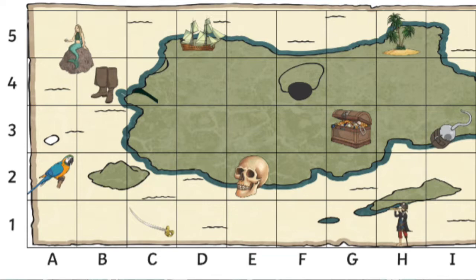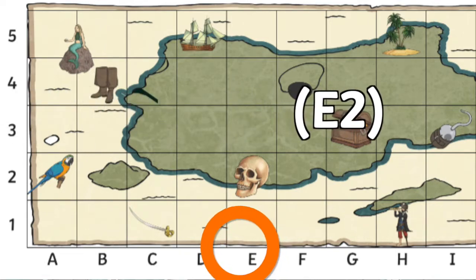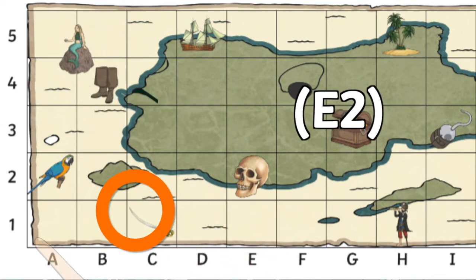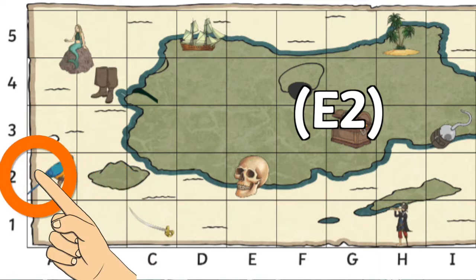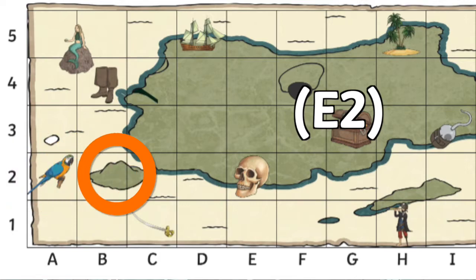Children will need to find the horizontal axis point first, for example E in E2, and then run their fingers up the vertical axis to find the second point of the reference, for example 2 in E2.